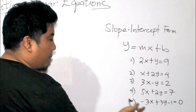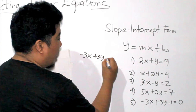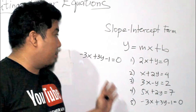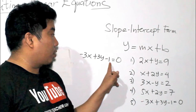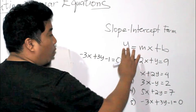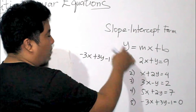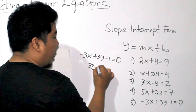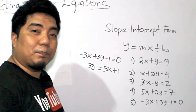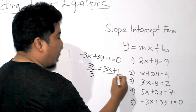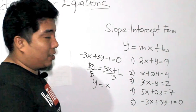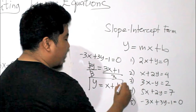For our final example, we have negative 3X plus 3Y minus 1 is equal to 0. This is neither standard form nor slope-intercept form, because the constant term is on the left side. Our aim is to make this slope-intercept form, so we move all terms except the Y term: we move negative 3X, giving positive 3X on the right, and we move negative 1, giving positive 1 on the right. So 3Y is equal to 3X plus 1. We divide by 3, giving Y is equal to X plus one-third. That is your final answer.